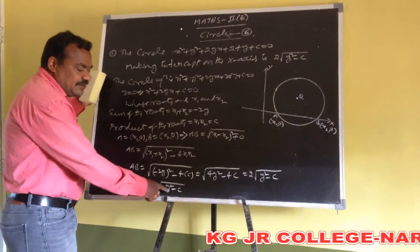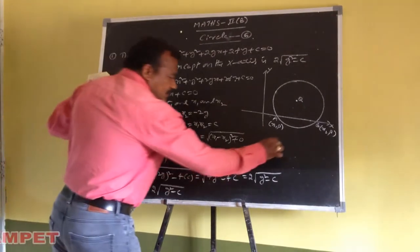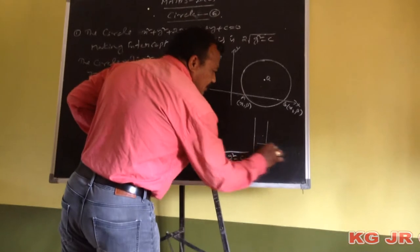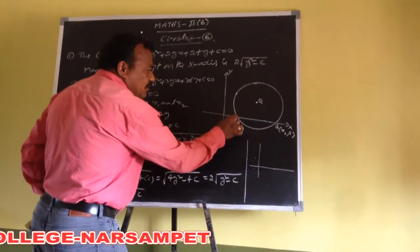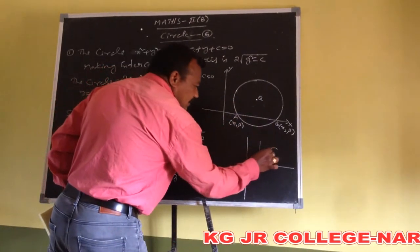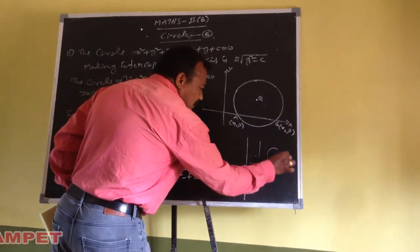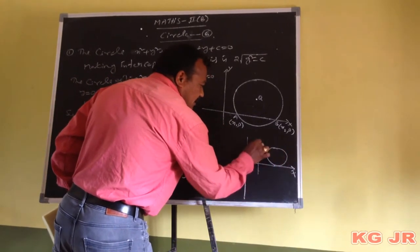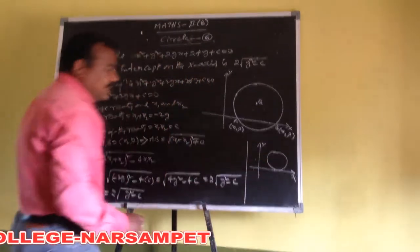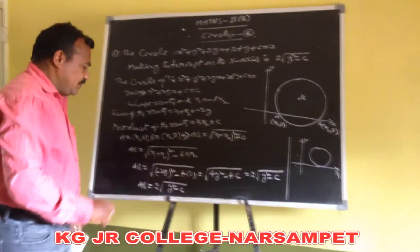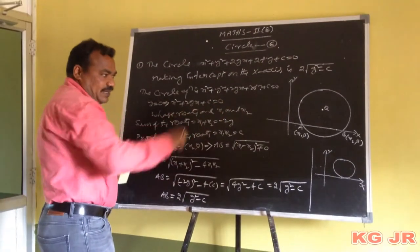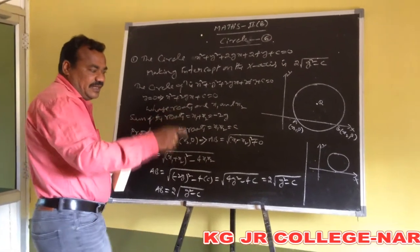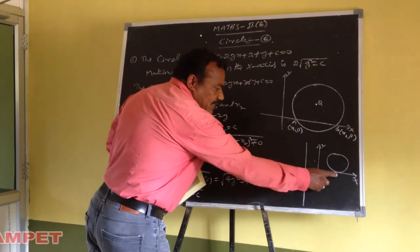Now another condition: if the intercept is equal to 0 — whenever the distance between these two points is equal to 0 — the circle touches the x-axis at one point. Whenever the intercept upon the x-axis is 0, the circle touches the x-axis.